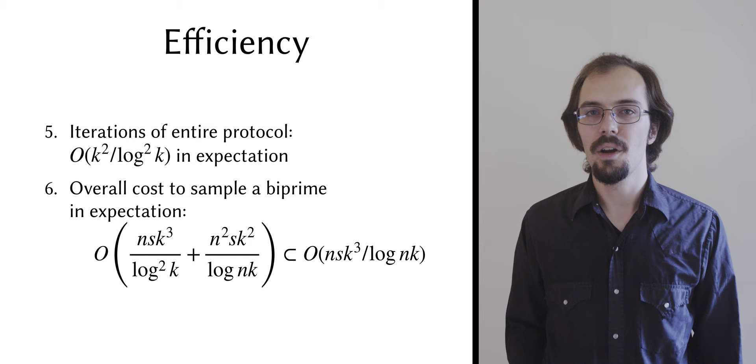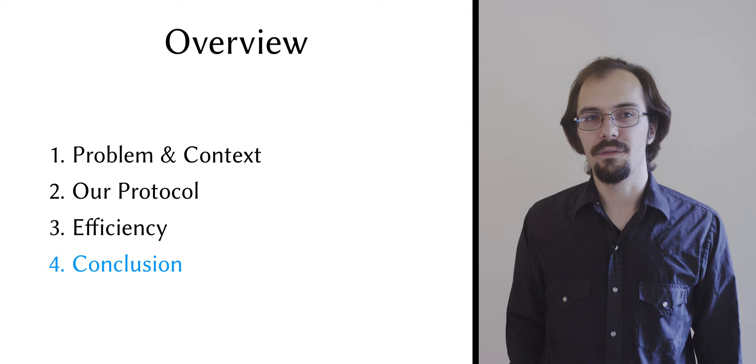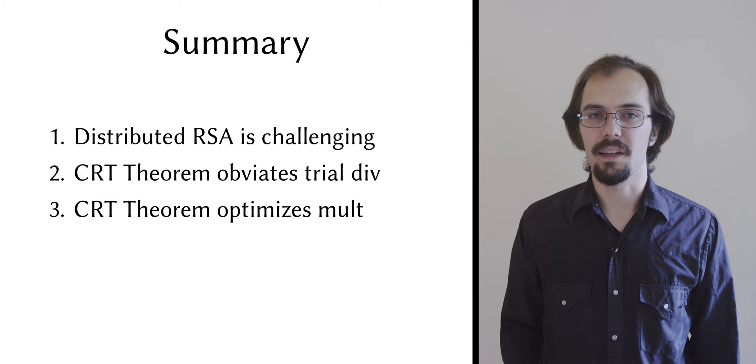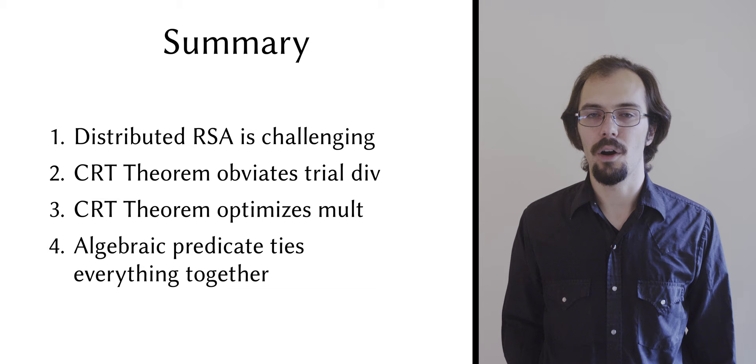To conclude, I hope that this talk has convinced you that distributed biprime sampling is a challenge. I've shown you how the Chinese remainder theorem can be used to optimize the sampling of candidate primes, and how it can be used to optimize multiplying those candidates together. And I've shown you how an algebraic predicate can be used to tie everything together without homomorphic encryption or proofs over cryptographic statements.